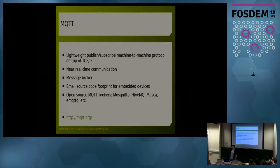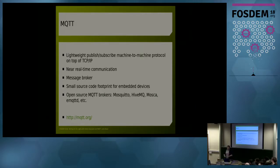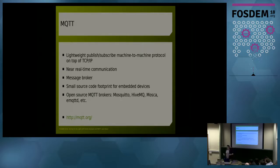The protocol on which the whole demo relies is called MQTT. I'm a huge fan of MQTT because it's a lightweight machine-to-machine protocol that requires a broker. The broker distributes messages to different clients that are subscribed on topics. The protocol has great advantages for embedded devices — it has a small footprint, so you can deploy it on pretty much any device. There are a lot of open source MQTT broker implementations, like Mosquitto written in C, HiveMQ written in Java, and Mosca written in Node.js. You can pick an MQTT broker that suits you best.